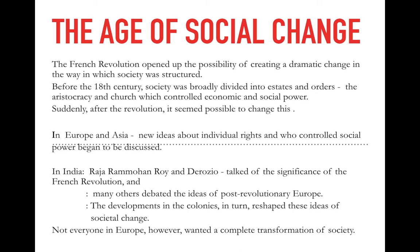After the revolution of 1789, things started to change in France and it transitioned from monarchy to constitutional monarchy and then to republic. At the end, when Napoleon Bonaparte became the main army chief, he declared himself as the emperor of France again.